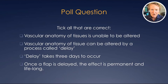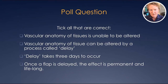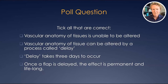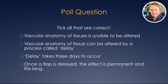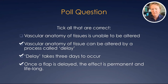Poll question: please choose all that you believe are correct. The vascular anatomy of tissue is unable to be altered — that's incorrect, as we've shown that delay converts choke anastomosis into true anastomosis. Vascular anatomy can be altered by a process called delay — correct. Delay takes three days to occur — correct, it occurs within three days. Once a flap is delayed, the effect is permanent and can't be reversed — correct, it's lifelong.